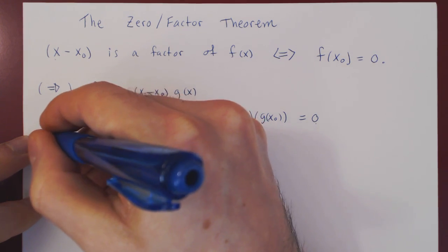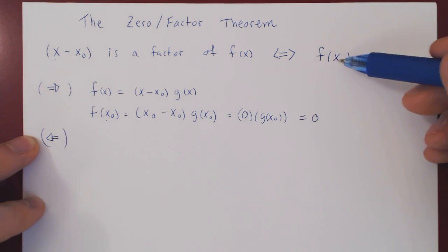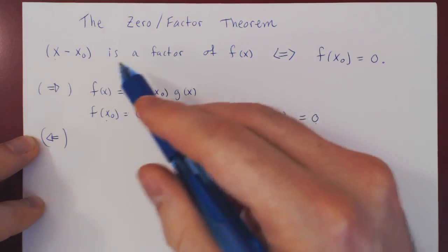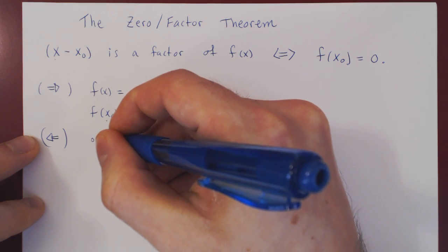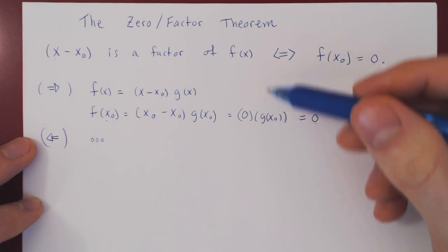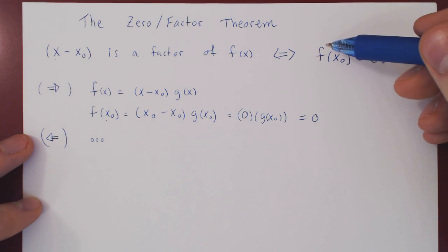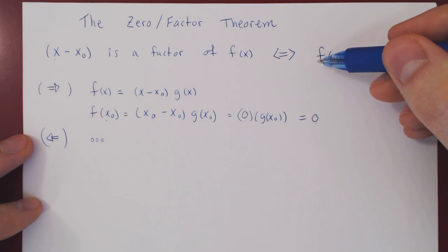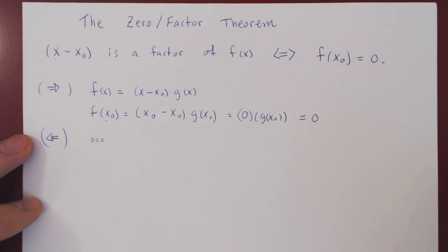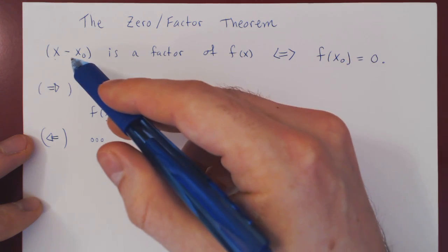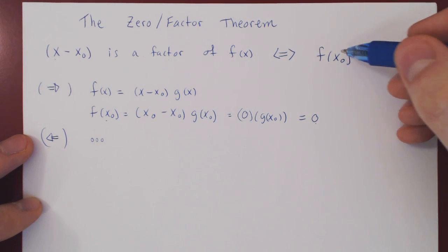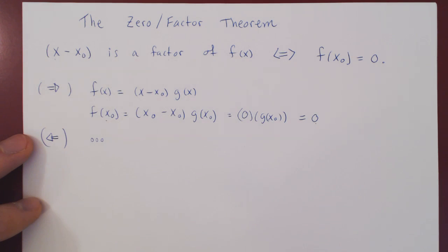What's not so obvious is the other direction: that if f of x₀ is equal to zero, automatically x minus x₀ is a factor of f of x. This we will not prove, as it is slightly more difficult. But this is the direction we'll use — once we deal with limits, we will have a polynomial and a zero of the polynomial, and the key to figuring out the limit will be to factor the polynomial using that zero as a free factor.